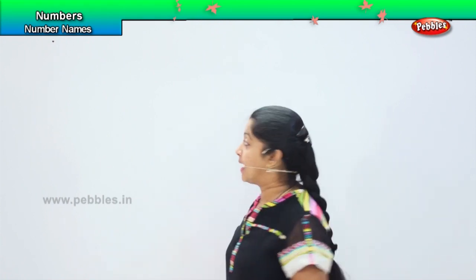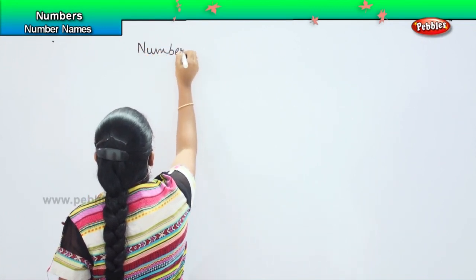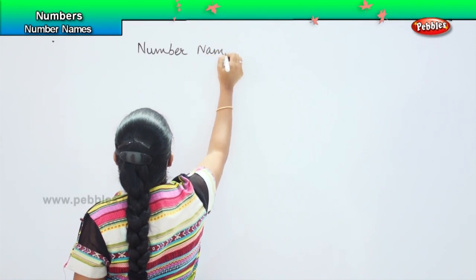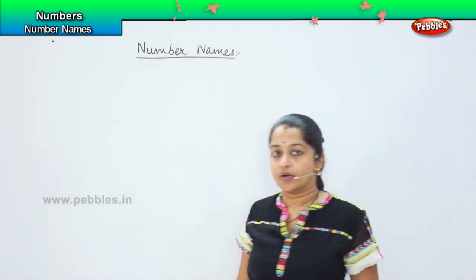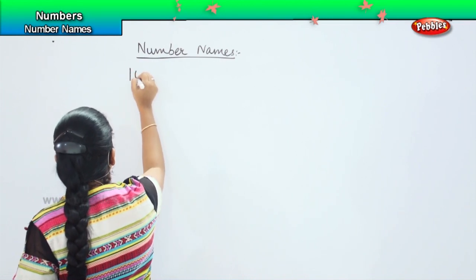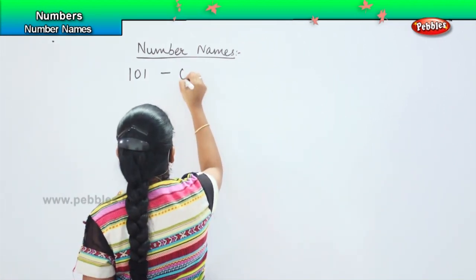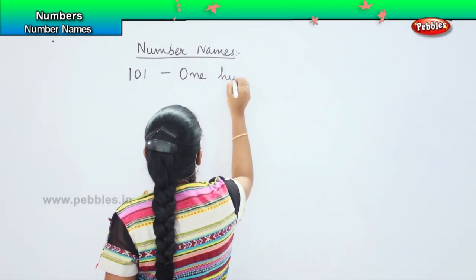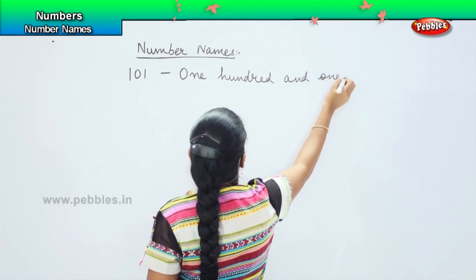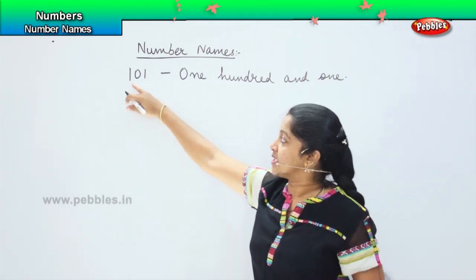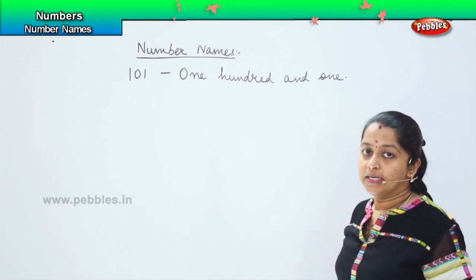The next concept is called number names. What do we mean by number names? We will be expressing numbers in the form of words. For example, if I write 101, how will I write it in number name form? I will write it as one hundred and one. So this number, which is given in number form, I am expressing it in word form. This is called the number name.